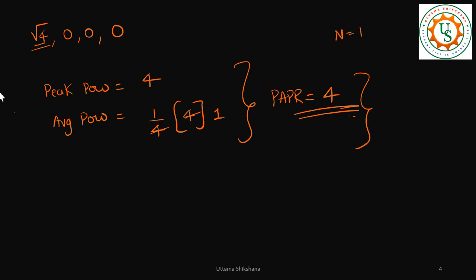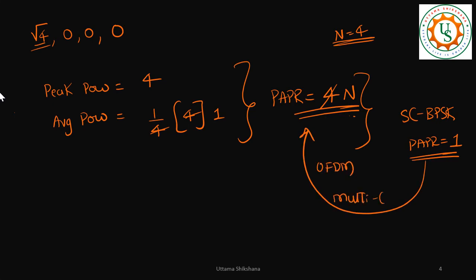In general this is actually n point, n is equal to four we are taken, so this will be n for an OFDM system. For a normal single carrier BPSK system, our PAPR value was equal to one, but whereas for OFDM system, which is a multi-carrier system, my PAPR is n.